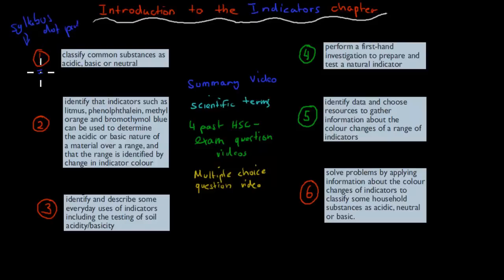In this case, the red one meant that it's just a content dot point. And the green one meant that it is a first-hand investigation, that it's an experiment. First-hand investigation for your green ones, and the other ones were just content.